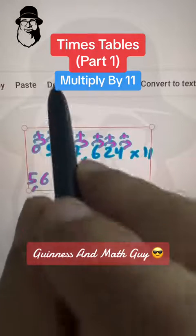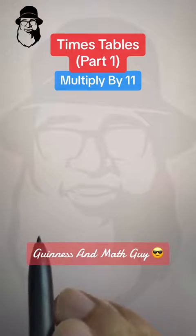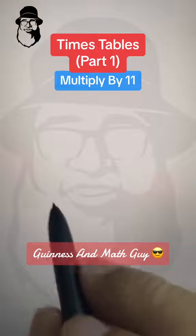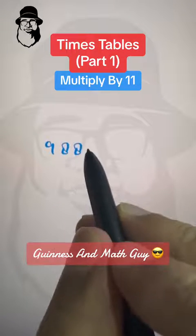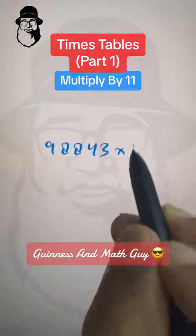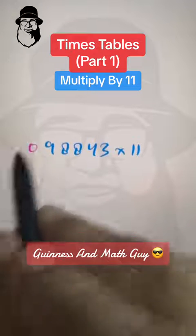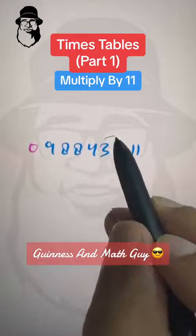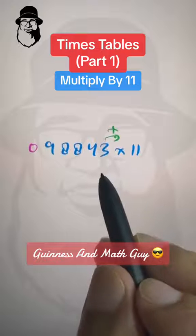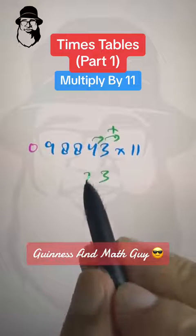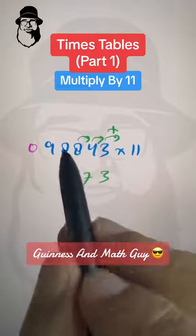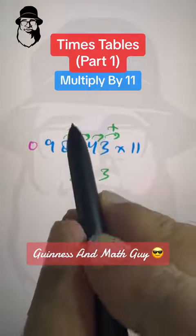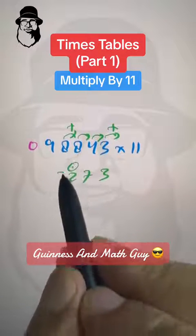And for the completion of this lesson, let me tell you sometimes on the left, there will be 10, like numbers like this, 9, 8, 8, 4, 3, let's say, times 11. If I put 0 here and we do as it is, 3 plus nothing is 3. 4 plus 3 is 7. 8 plus 4 is dot 2. And then 8 plus 8 is 16. And this dot will make it 17. So we'll put dot 7.